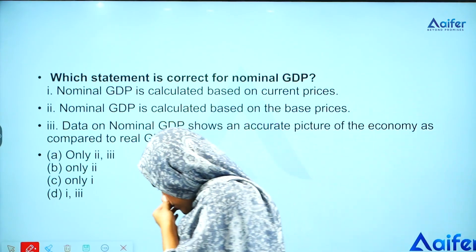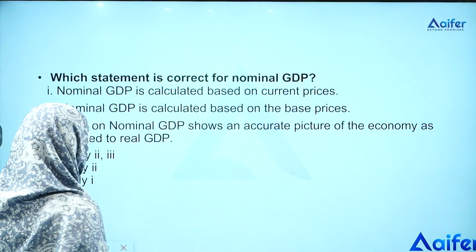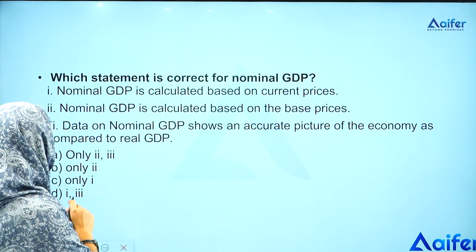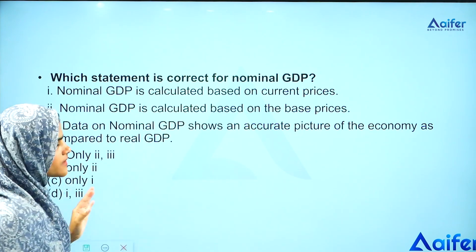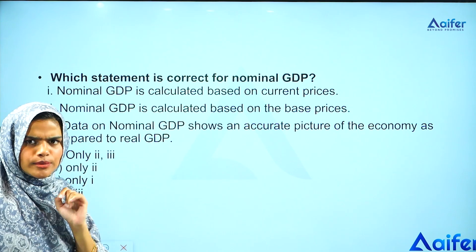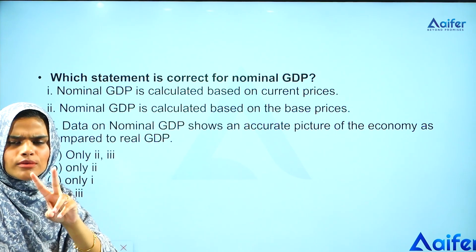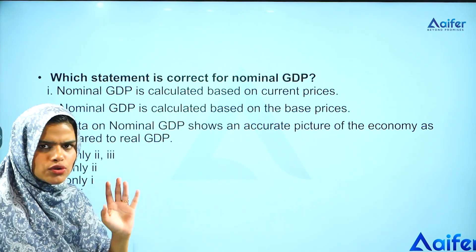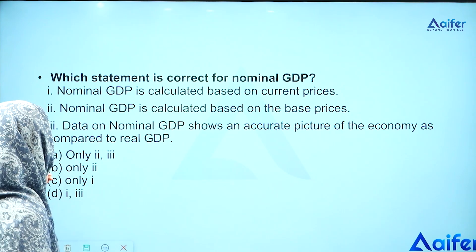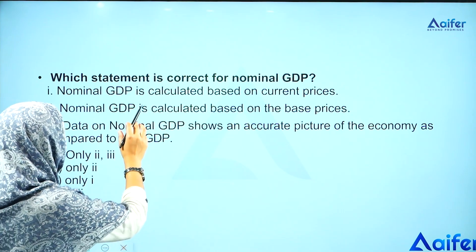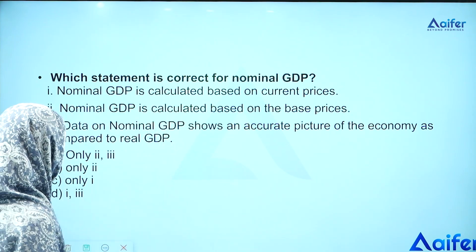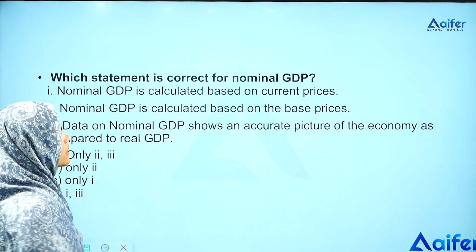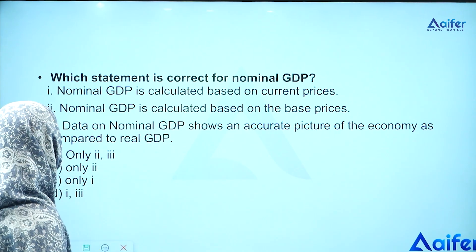Moving to the question. Which statement is correct for nominal GDP? Nominal GDP has two written statements. Statement one: Nominal GDP is calculated based on current prices. Statement two: Nominal GDP is calculated based on the base year price.